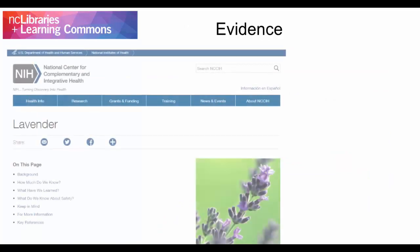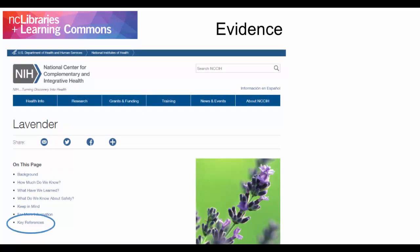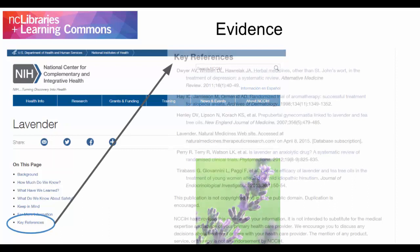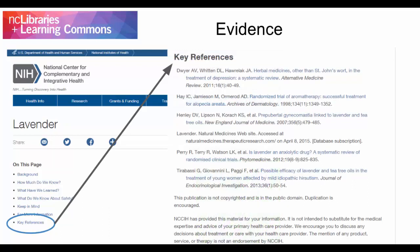Next, ask yourself what sort of evidence the author provides for the points they are trying to make. Does the site list citations for or link out to other websites, data, or print resources? Do the links provided actually work? Can you verify the evidence used in the site? Does the site rely on evidence from many different sources, or just a couple? The more verifiable evidence that a site uses, the more likely the information the site is trying to convey is accurate.